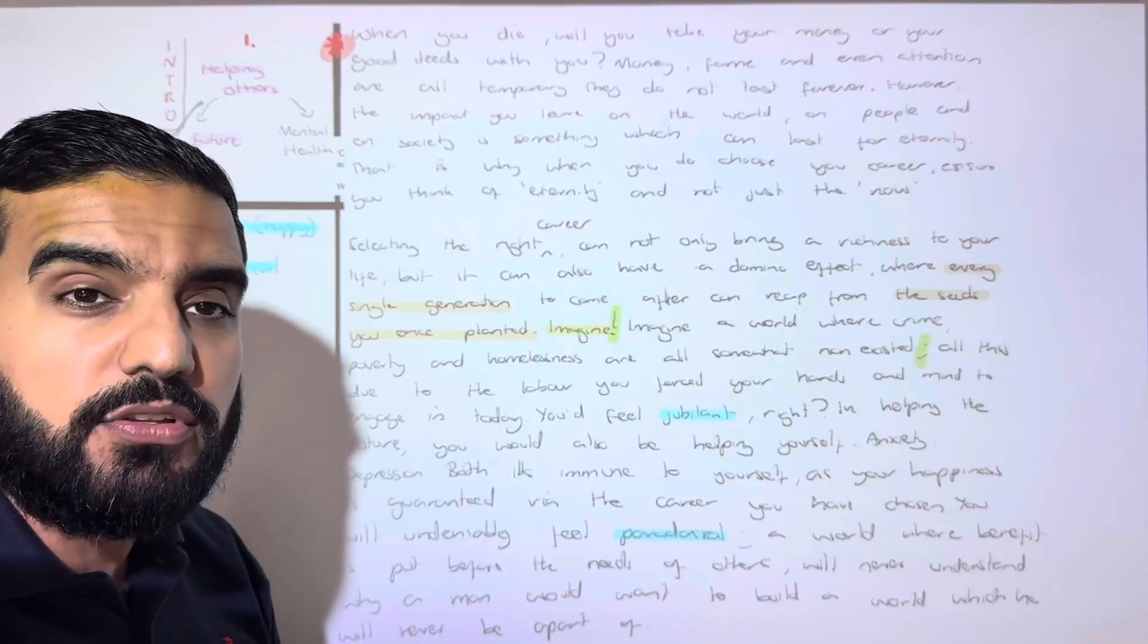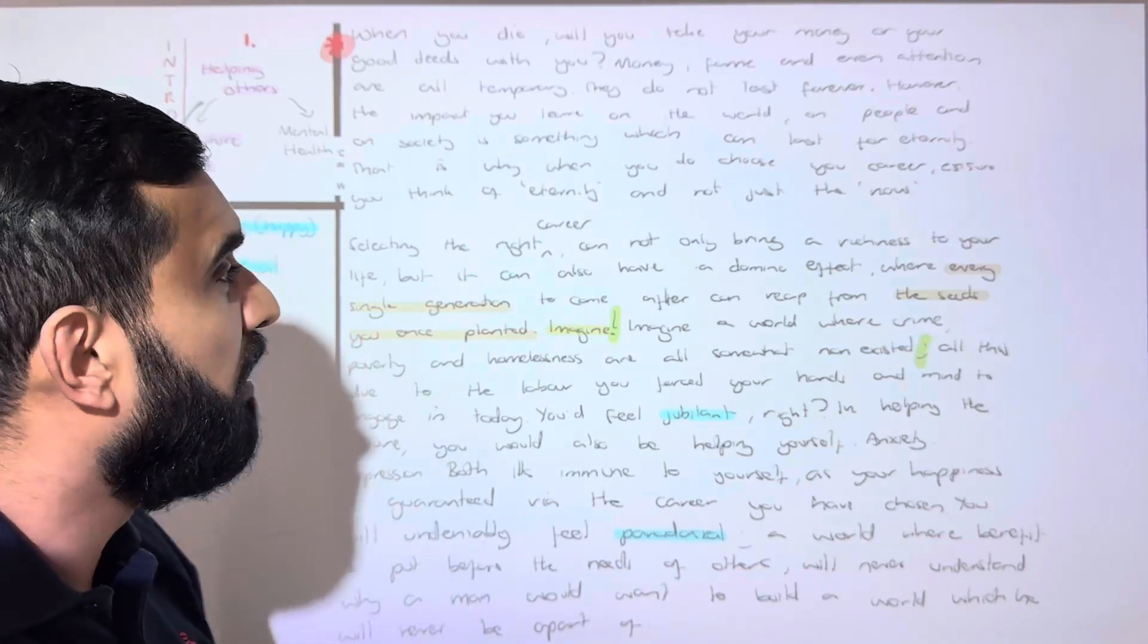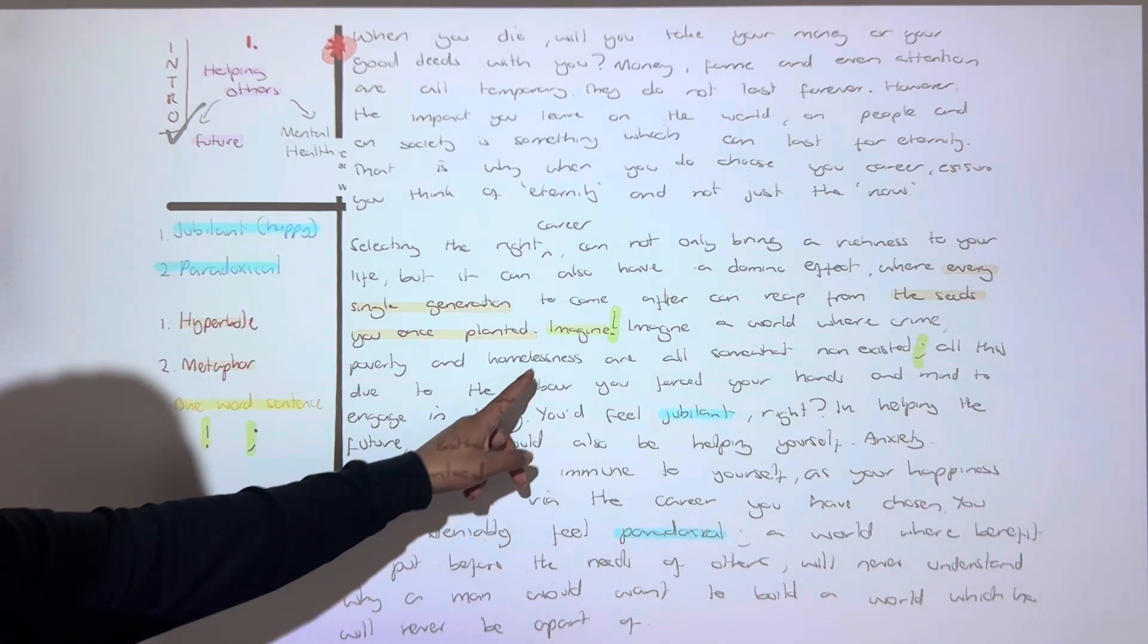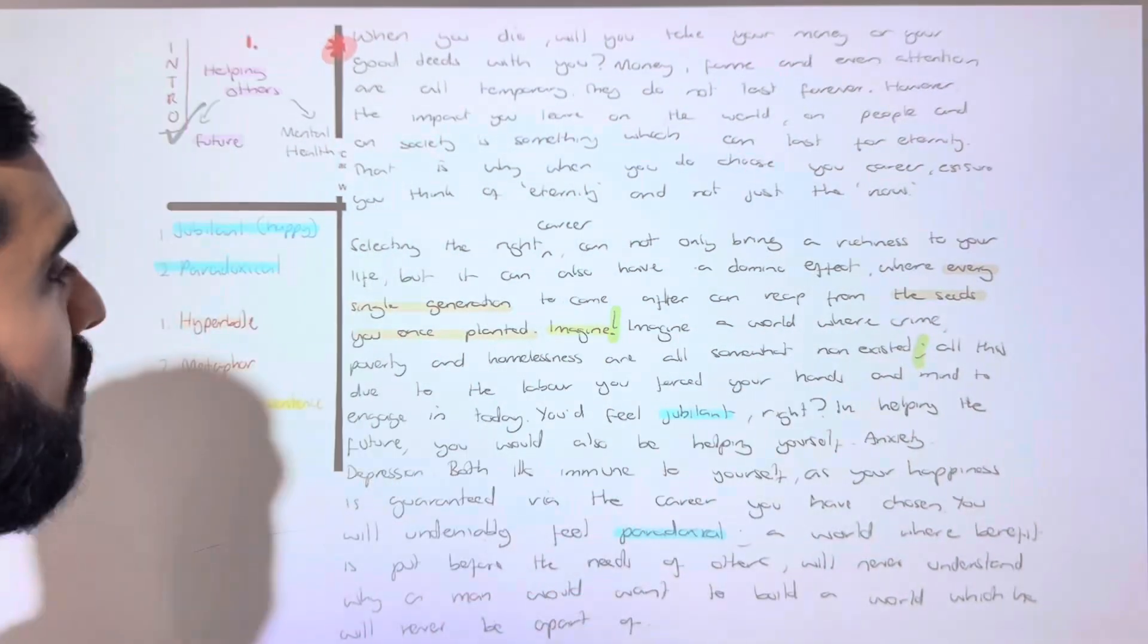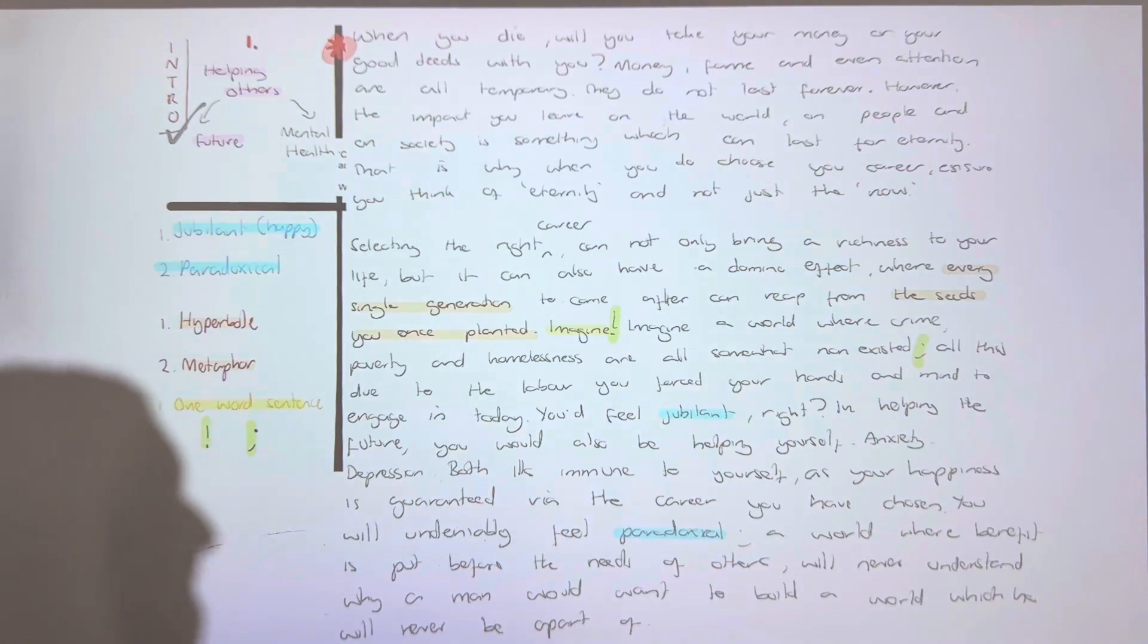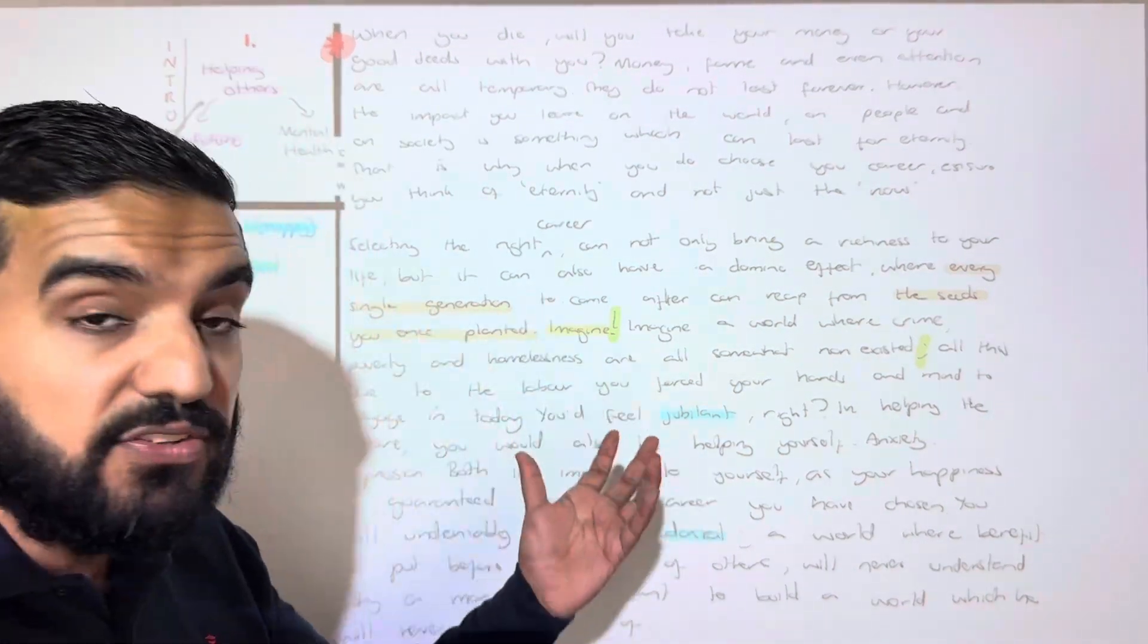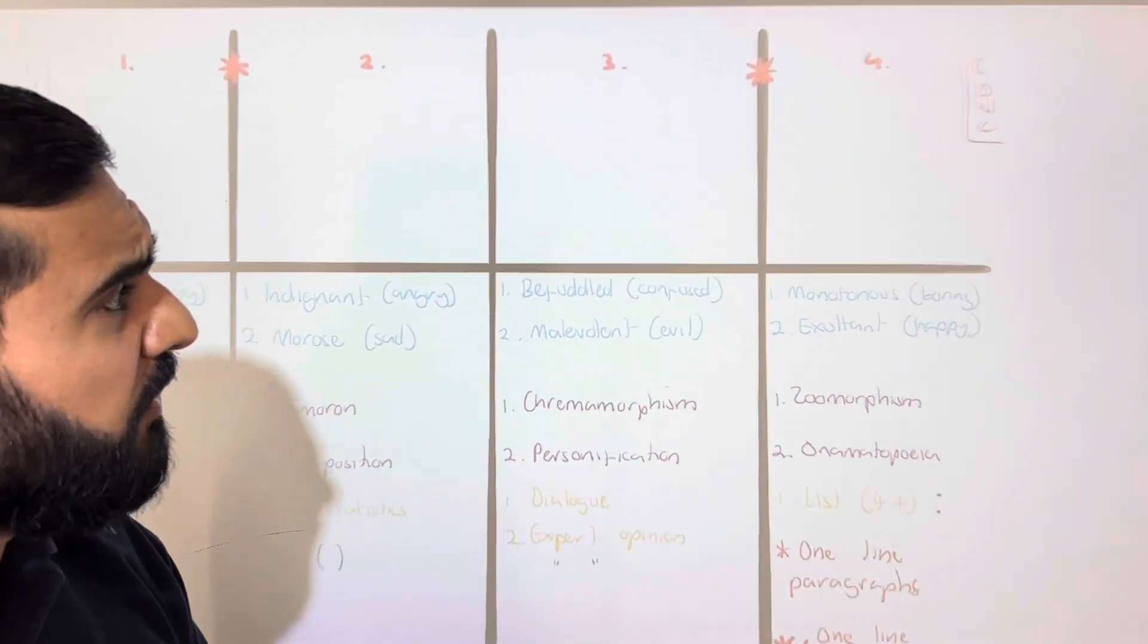Then I move on to my first paragraph. In my first paragraph, guys, I've got hyperbole, I've got metaphor, I've got my one-word sentence, I've got my punctuation, and I've got my vocabulary, and I present my argument. That's it. But I was able to do this in five minutes planning time because I had pre-planned this. Now, guys, look.